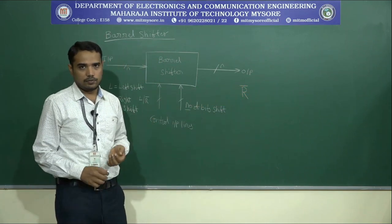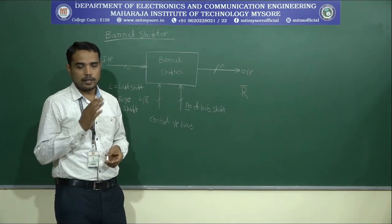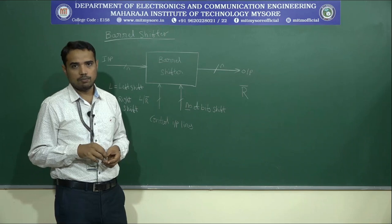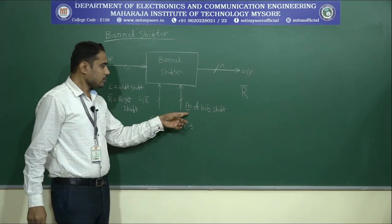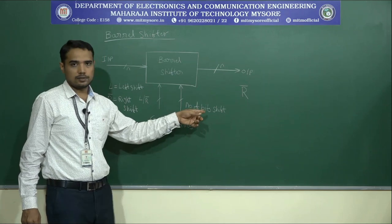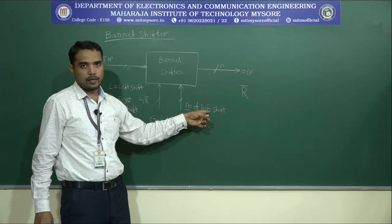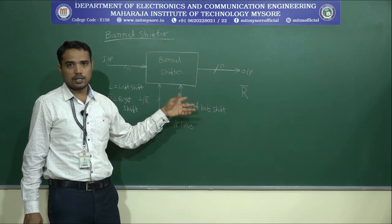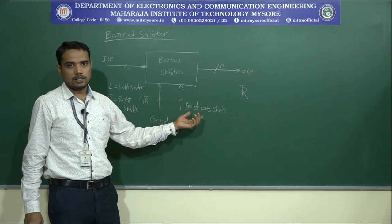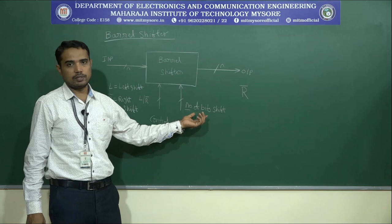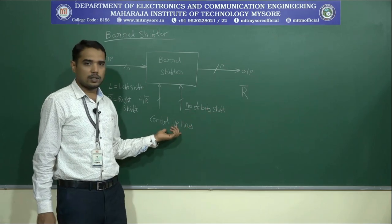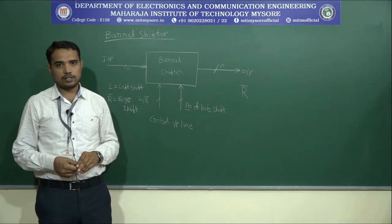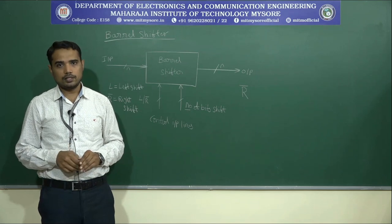With R̄, in each and every right shift, we retain a copy of the sign bit and then shift the rest of the bits towards the right. The second control input gives the number of bits to be shifted — whether 1 bit, 2 bits, or 4 bits at a time. These two are the control input lines. Now let us see how the implementation of a barrel shifter is done with respect to a 4-bit shifter.